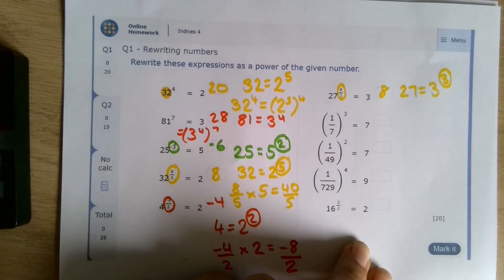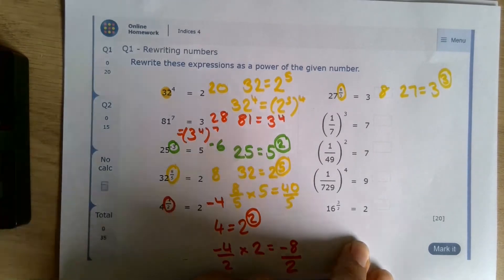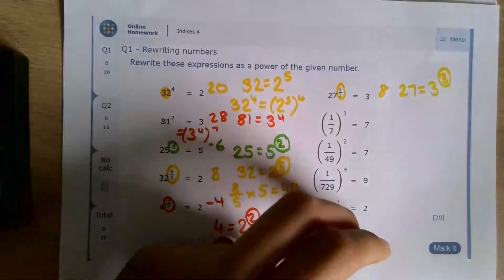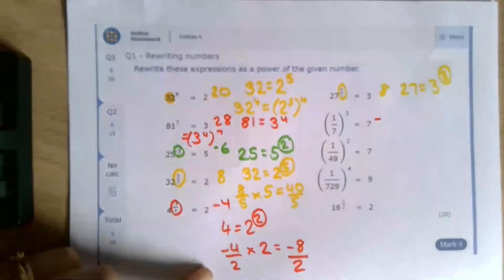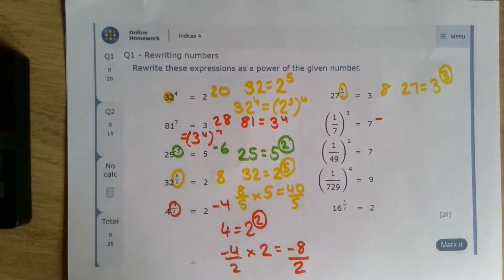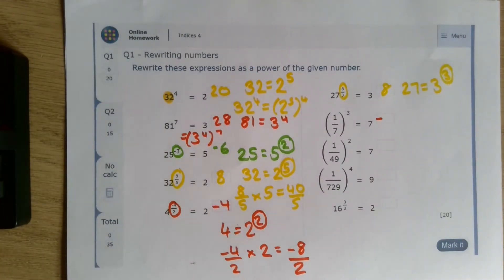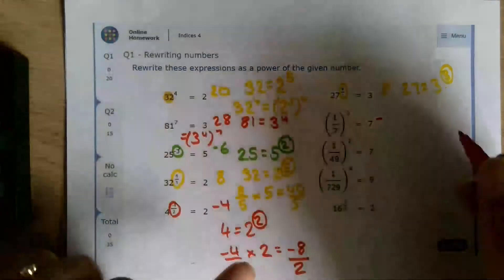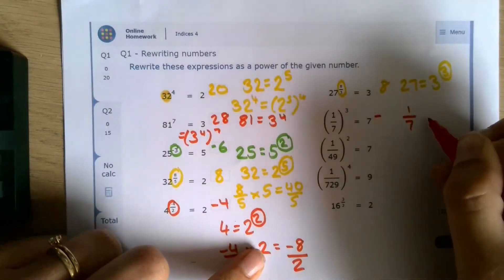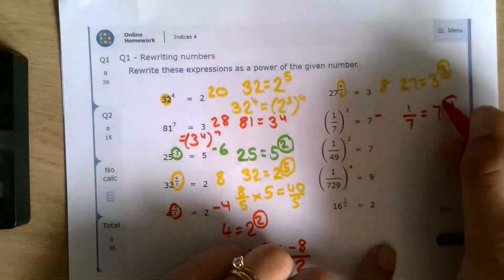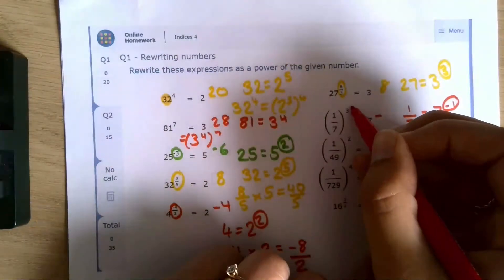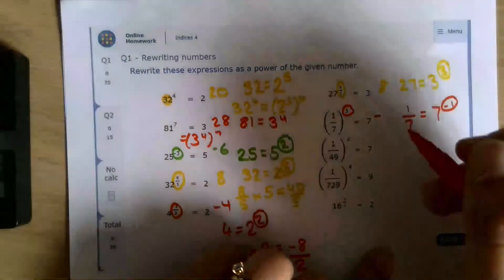1 seventh to the power of 3. Now, first of all, this is a fraction. It is a reciprocal power, which means we have got a negative. 1 over 7. 1 over 7 to the power of what? Well, 1 over 7 is 7 to the power of minus 1. So we're going to multiply the negative 1 and the 3. Negative 1 times 3 is negative 3.